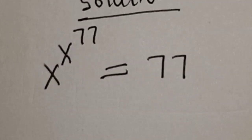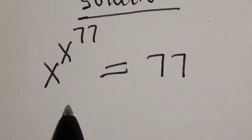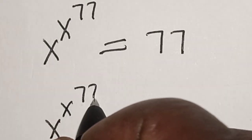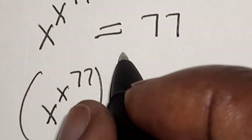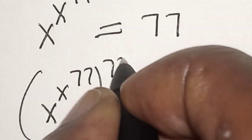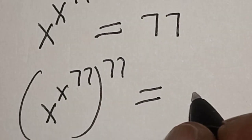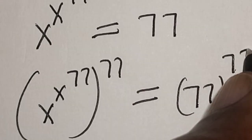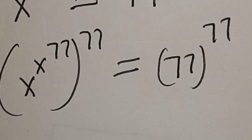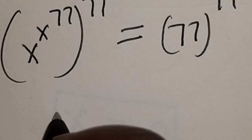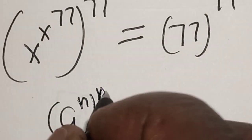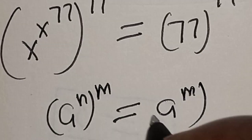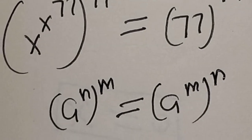Let's multiply the power on both sides by 77. That is, x raised to power x raised to power 77, all raised to power 77, is equal to 77 multiplied by 77. Now remember that if you have a raised to power n raised to power m, this is equal to a raised to power m raised to power n.